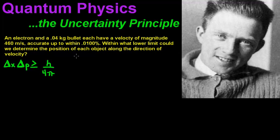So another way to write this is delta x is greater than or equal to h divided by the change in momentum times 4 pi. In this problem it says an electron and a 0.04 kilogram bullet each have a velocity of magnitude 460 meters per second accurate up to within 0.0100 percent. Within what lower limit could we determine the position of each object along the direction of velocity.